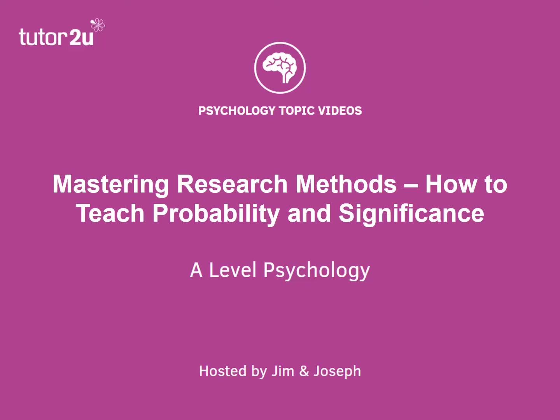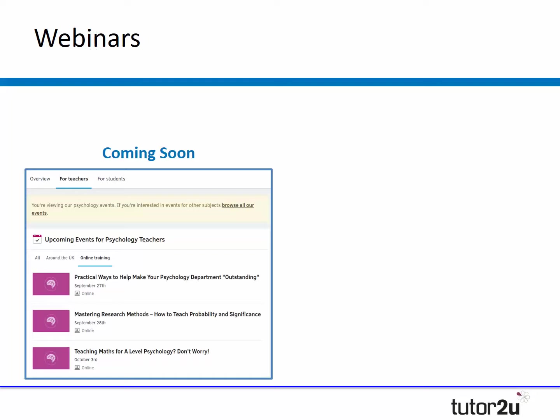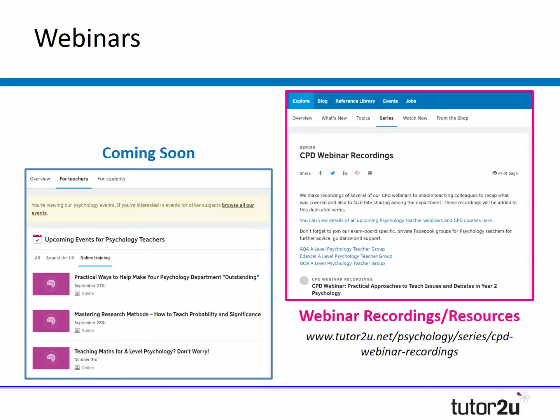Hello and welcome to this short psychology topic video, titled Mastering Research Methods: How to Teach Probability and Significance. We have another in our Mastering Research Methods series coming up next week on the 3rd of October, titled Teaching Maths for A-Level Psychology, Don't Worry. All of the recordings and resources to our webinars can be found directly on the Tutor2U website.